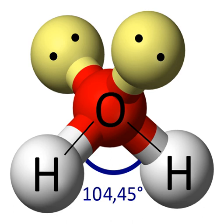VSEPR theory is used to predict the arrangement of electron pairs around non-hydrogen atoms in molecules, especially simple and symmetric molecules, where these key central atoms participate in bonding to two or more other atoms. The geometry of these key atoms and their non-bonding electron pairs in turn determines the geometry of the larger whole. The number of electron pairs in the valence shell of a central atom is determined after drawing the Lewis structure of the molecule and expanding it to show all bonding groups and lone pairs. In VSEPR theory, a double bond or triple bond is treated as a single bonding group. The sum of the number of atoms bonded to a central atom and the number of lone pairs formed by its non-bonding valence electrons is known as the central atom steric number. The electron pairs are assumed to lie on the surface of a sphere centered on the central atom and tend to occupy positions that minimize their mutual repulsions by maximizing the distance between them, thus determining the overall geometry.